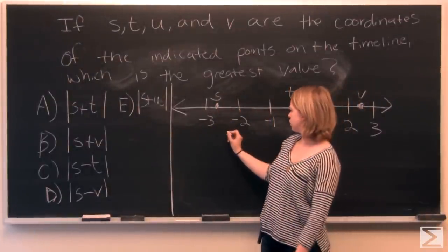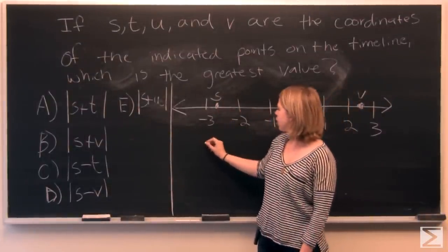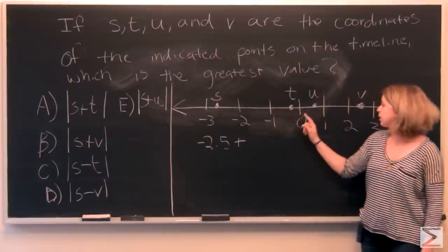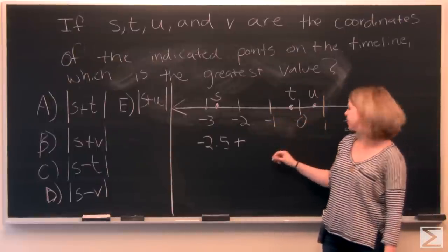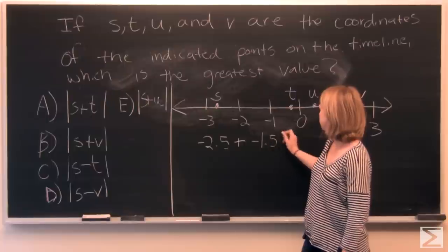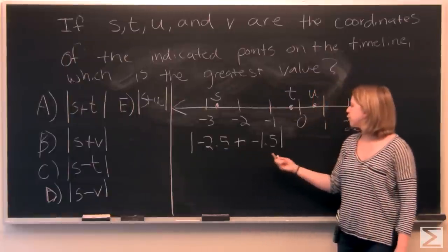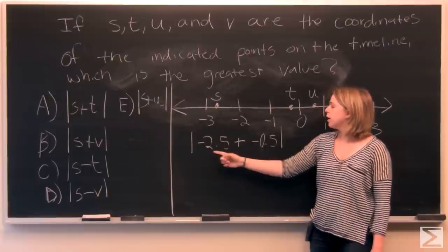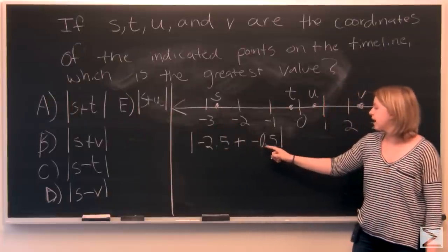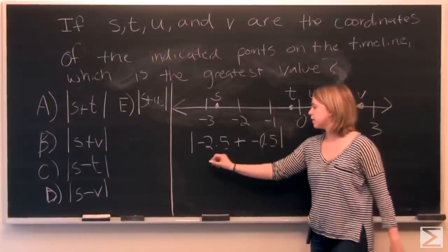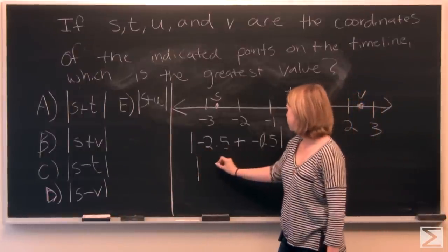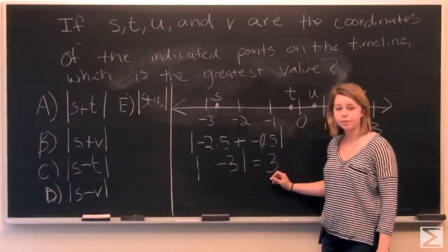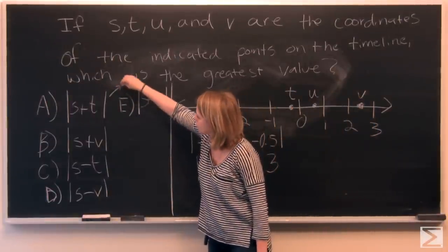S is just about between negative 2 and negative 3. We'll call S negative 2.5 and we are adding to it the value of T which lies between 0 and negative 1. So we'll call it negative 0.5. We're looking for the absolute value. So we're looking for negative 2.5 which is coordinate S plus negative 0.5. And this gives us the absolute value of negative 3 which equals positive 3. So we know answer choice A equals 3.